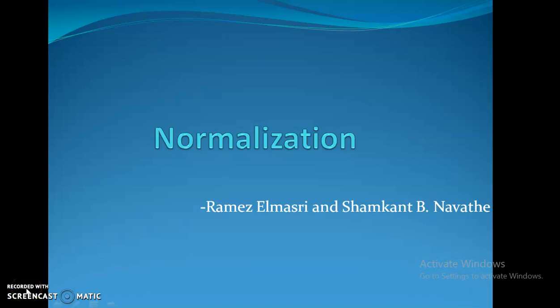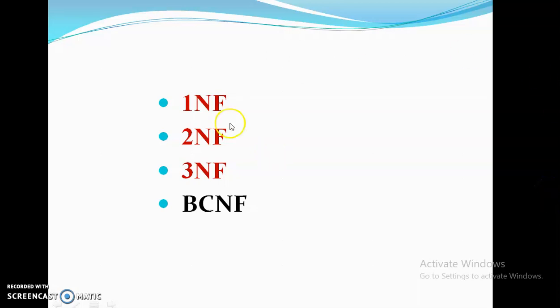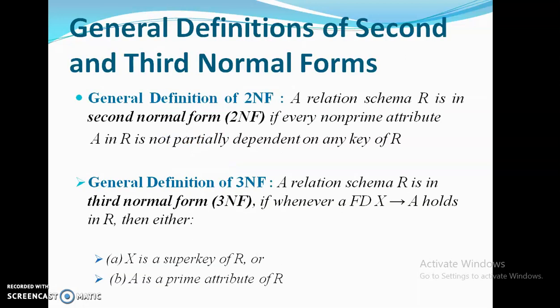Hi students, hope you all got an idea about normalization and the various normal forms: first normal form, second normal form, and third normal form. We are starting with the general definitions of second and third normal forms. We have already discussed 1NF, 2NF, and 3NF, and I also mentioned Boyce-Codd normal form in the introductory part. So before that, I would like to start with the topic we paused on in the earlier session: general definitions of second and third normal forms.